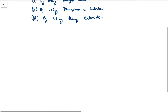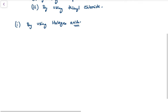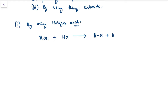The first process is by using halogen acids. The mechanism can be written as follows: ROH + HX leads to the formation of RX + H₂O. This product is known as a haloalkane or alkyl halide.